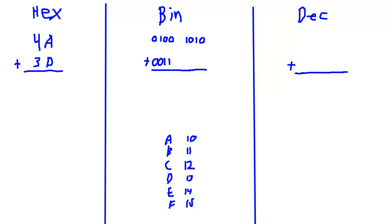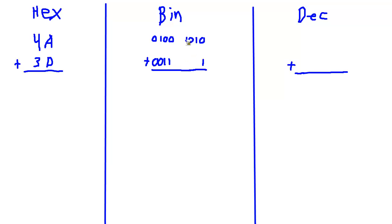So D is 13 in decimal. But how do I get the binary equivalent? Well, I know I'm going to need a 1, since it's an odd number. Then 13 minus 1 is 12. How do I make 12? That's going to be an 8 and a 4, but not a 2. So 8 plus 4 plus 1 makes 13 decimal, and in hex that's D. So there's the binary equivalent — it went very cleanly.